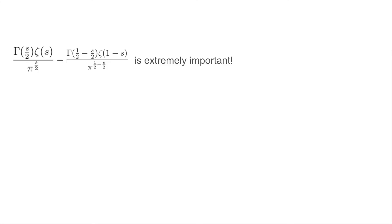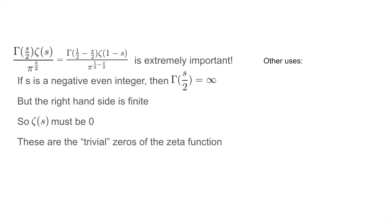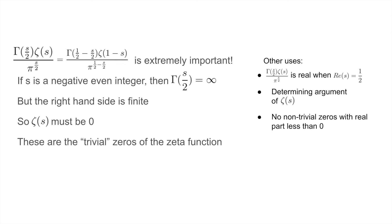The functional equation is extremely important with many consequences. For example, if s is a negative even integer, the gamma recursion we proved shows that gamma of s over 2 is infinite. But the right hand side is finite, so zeta of s must be zero to keep the equation balanced. Therefore zeta of any negative even integer is zero — these are called the trivial zeros of the Riemann zeta function. Due to the symmetry of gamma of s over 2 times zeta of s divided by pi to the power of s over 2, one can show it must be real on the critical line where the real part equals 1 half, which determines essentially the argument of the zeta function. The formula also shows all non-trivial zeros must have real part between 0 and 1. The functional equation is a starting point for much important mathematics relating to the Riemann zeta function.